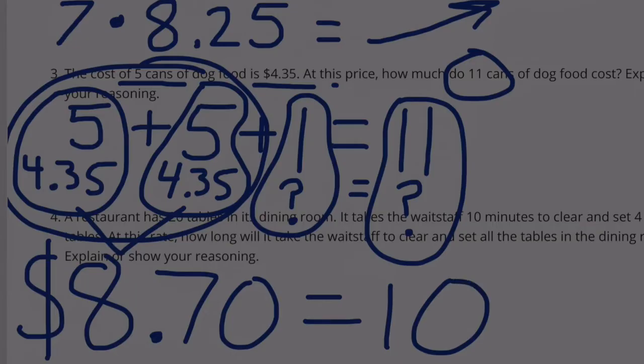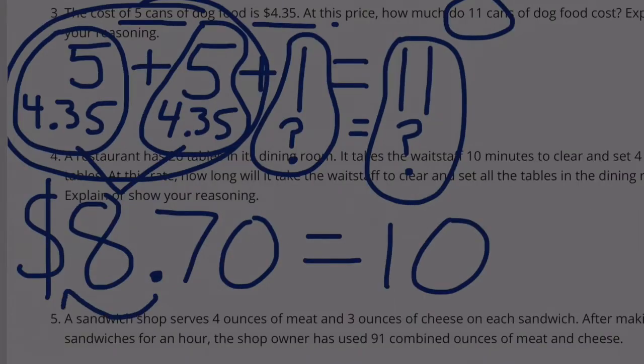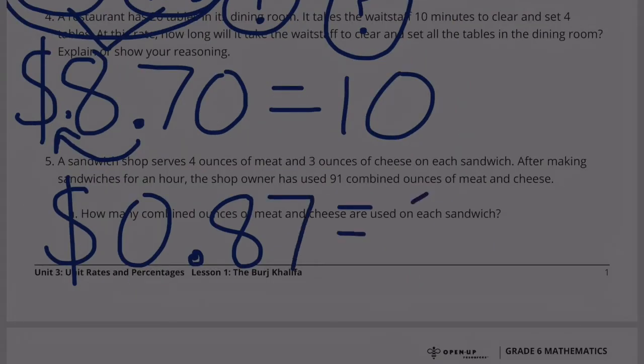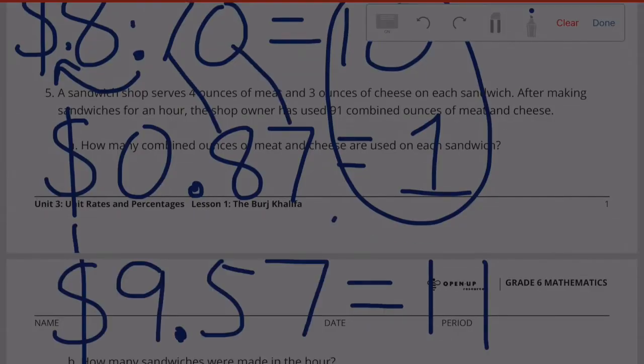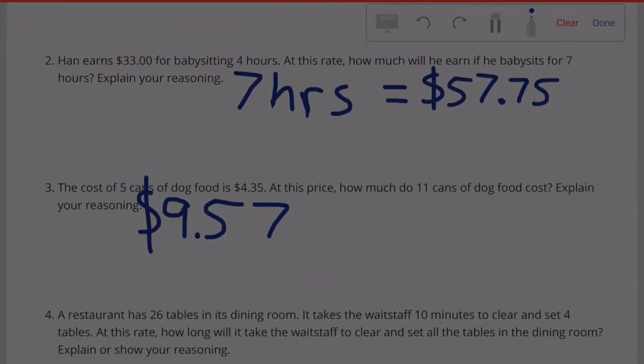And if this is how much it is for 10 cans, if I make it 10 times smaller, $0.87 for one can, then I can add 10 plus 1 to get 11 cans and $8.70 plus $0.87. It should cost $9.57 for 11 cans of dog food.